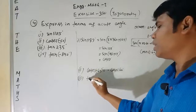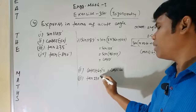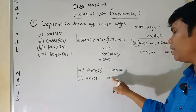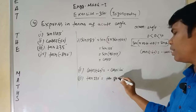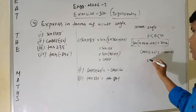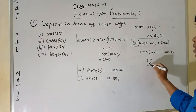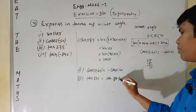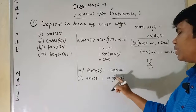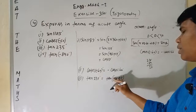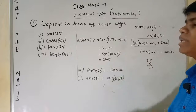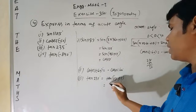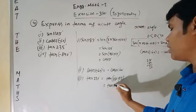The third one is tan(235°). We express this as tan(180° + 55°), since 235 − 180 = 55. This lies in the third quadrant. In the third quadrant, tan is positive. So tan(235°) = tan(55°).